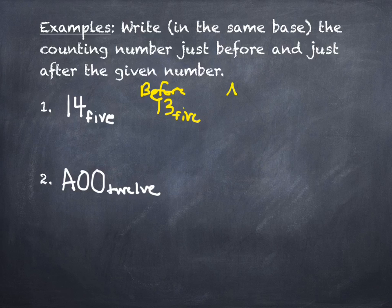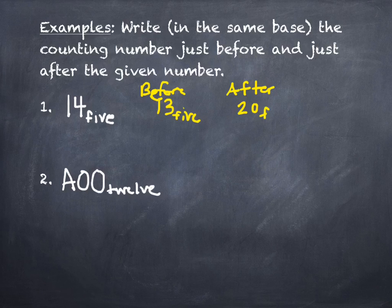Let's do the easy one first. What number comes before one-four in base 5? One-three. To indicate base 5, we write subscript 5 beside it. What's the number after one-four? Two-zero. The real reason it's two-zero is that four is as big as it gets in base 5 — I can't write 'one five' because there are no fives. I've run out of digits, so I increase the first digit by one to get two and reset the last digit to zero.